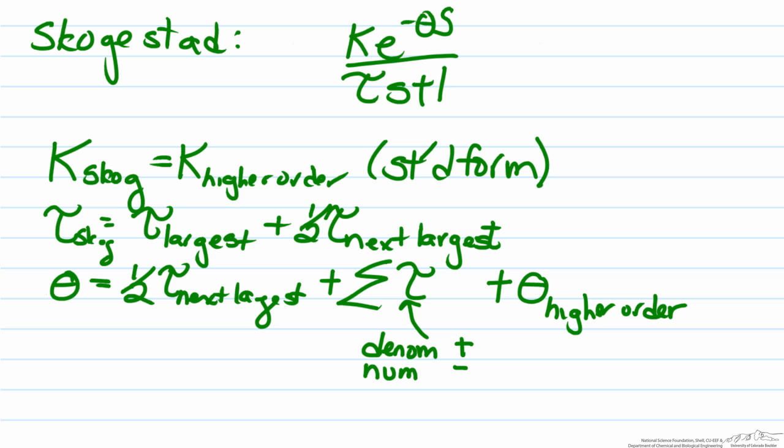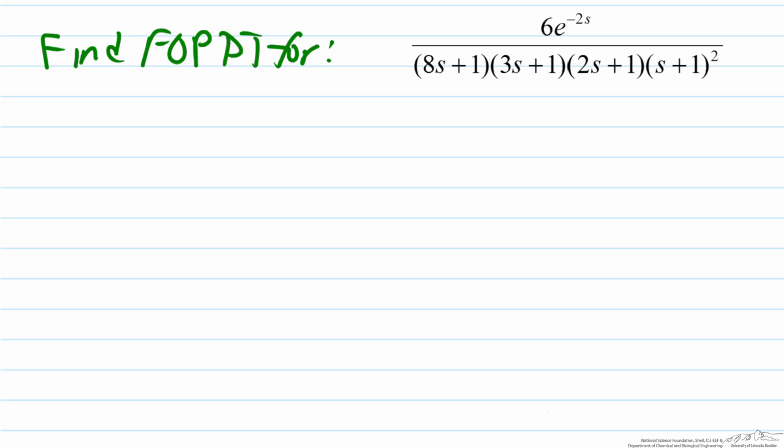So the Skogestad is not an exceptionally difficult method to allow us to approximate a higher order transfer function as a FOPDT. So what we're now going to do is use these formulas in order to find a FOPDT for a fifth order transfer function. What we're going to do here is find the FOPDT for the transfer function that we have here. Well, first we have to check the criteria for use of Skogestad's method, so let's check our criteria.